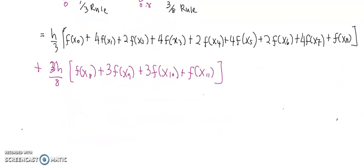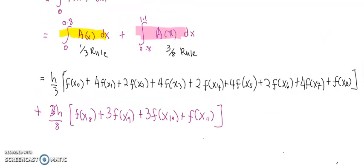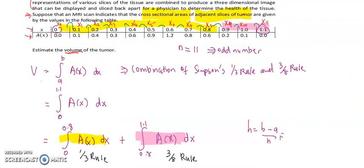Before you substitute values into the formula, we must find the h value. The formula is h = (b - a) / n. To calculate h, refer to the main integration from 0 to 1.1, so b is 1.1, a is 0, over n. Our n is 11 because we have 12 data points, dividing the x values into 11 intervals.